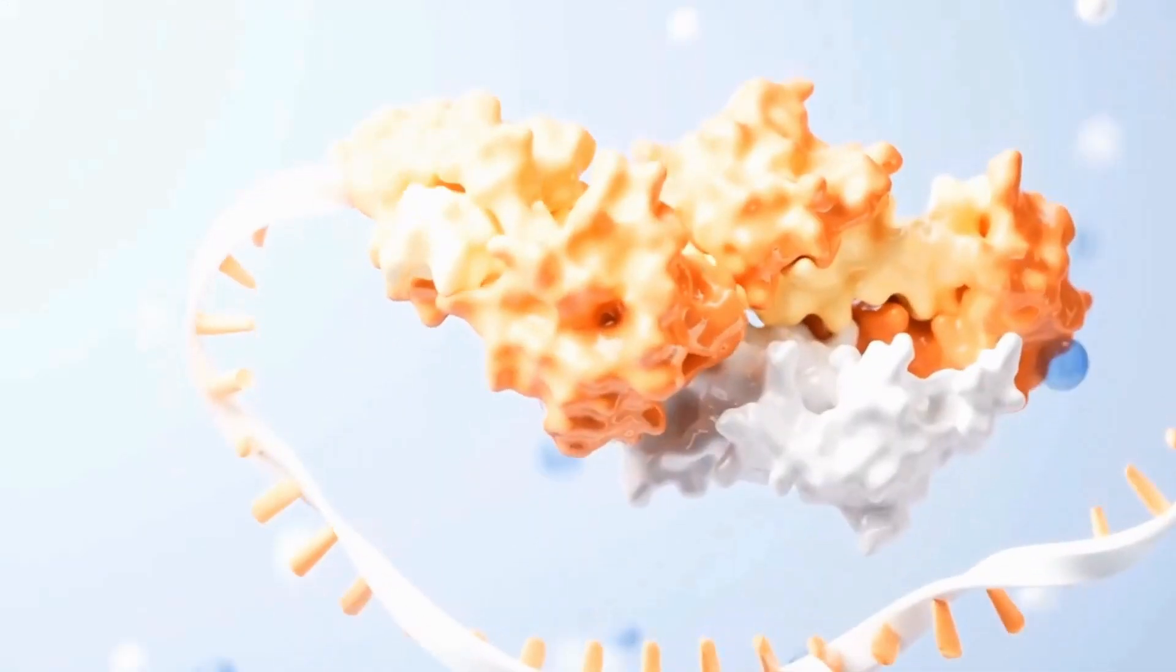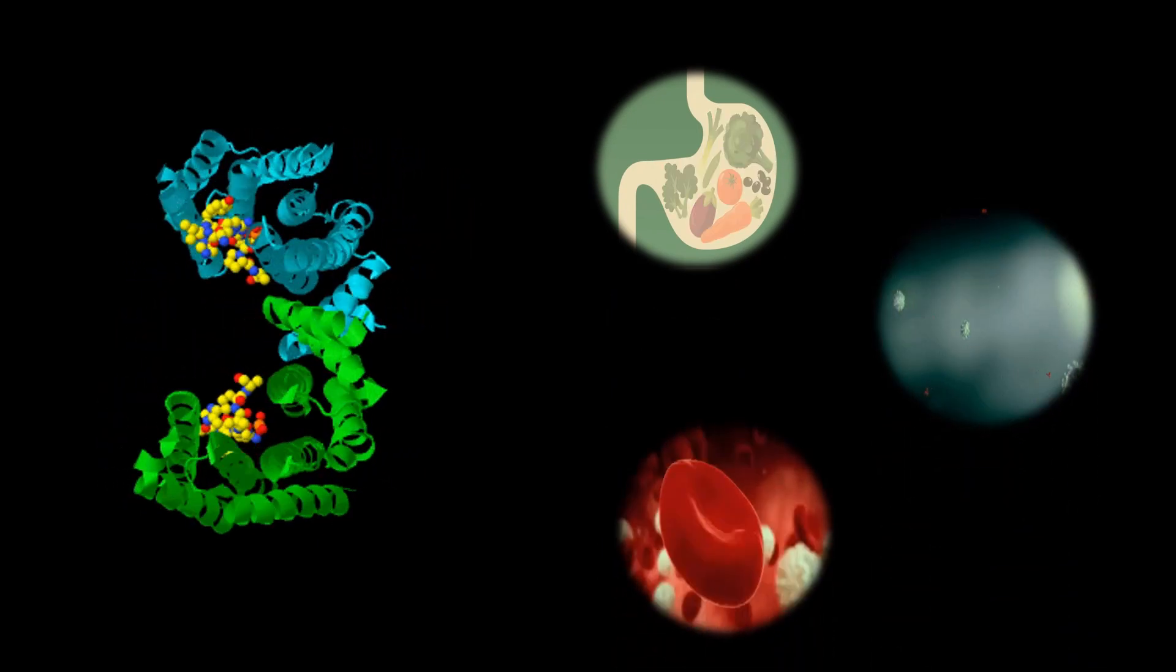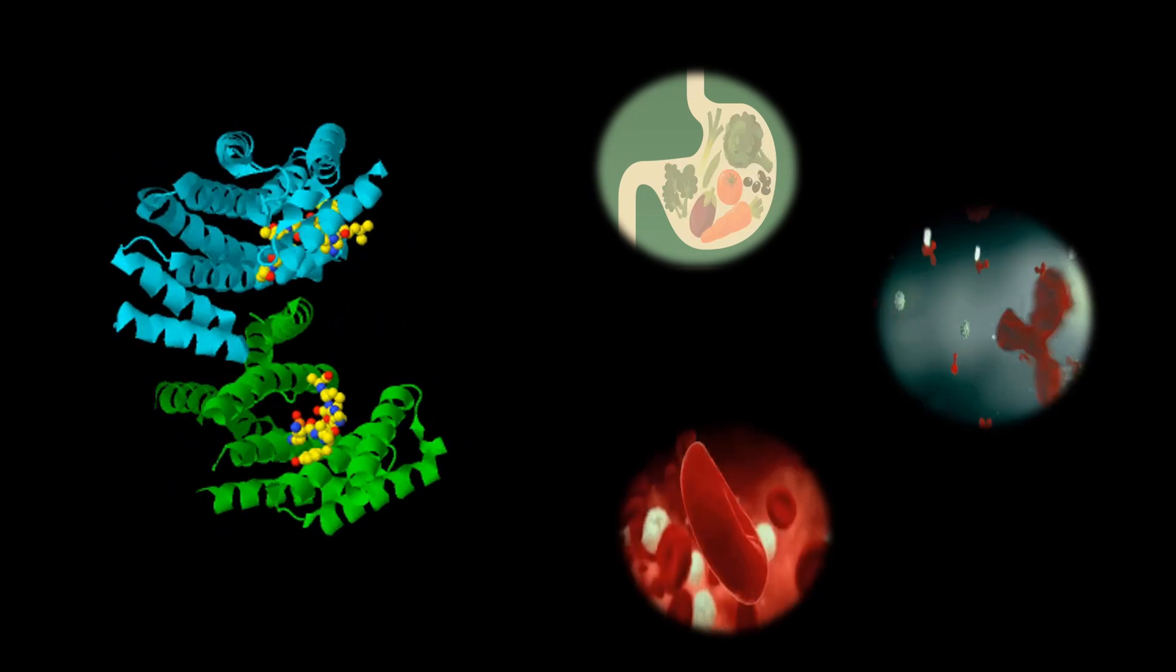Why does this matter? Well, a protein's shape is crucial because it determines how the protein functions. For example, enzymes that digest food, antibodies that protect against infections, and even the hemoglobin that carries oxygen in your blood all rely on their shape to do their jobs.